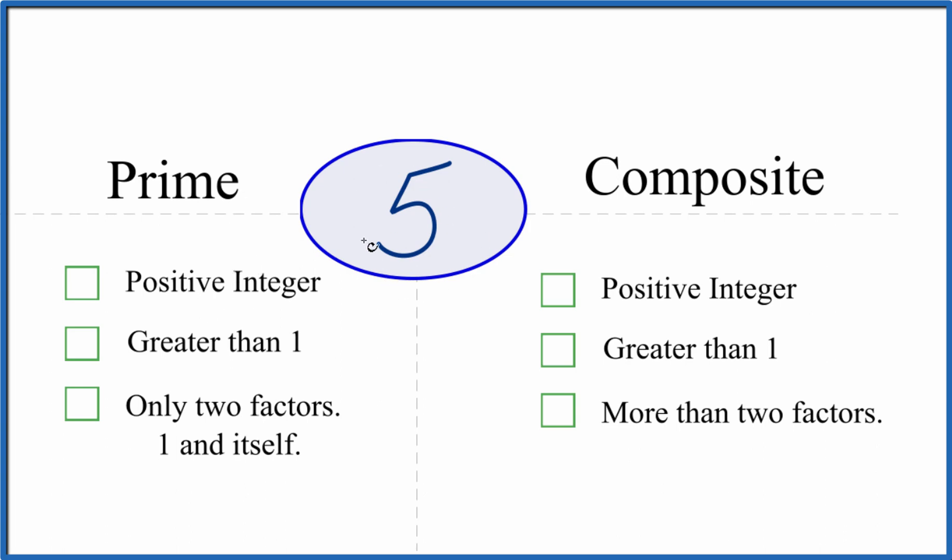So is 5 a positive integer? Yeah, it's a positive number. It's a whole number. Is it greater than 1? 5 is greater than 1.